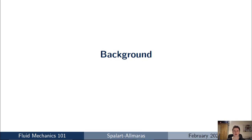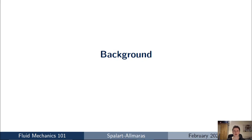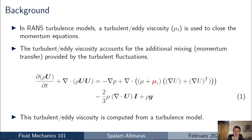So I'm going to start off with a quick background. We're considering RANS turbulence models — that's Reynolds-Averaged Navier-Stokes turbulence models. For RANS models, we're solving the momentum equations, and to account for the additional mixing and momentum transfer by the turbulent fluctuations, we're using a turbulent or eddy viscosity term μt, which allows us to account for the additional mixing from turbulent fluctuations without modelling them explicitly.